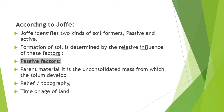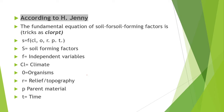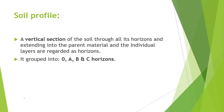Soil formation is determined by the relative influence of passive and active factors. The passive factors are parent material, relief/topography and time. The active factors are climate and organisms. According to Jenny, the fundamental equation of soil-forming factors is: soil is a function of climate, organism, relief, parent material and time.